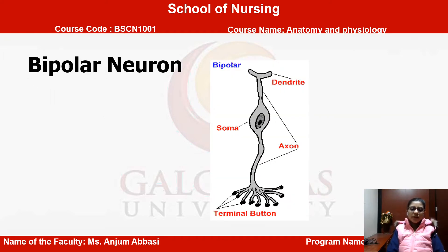In the second lecture of neuroglial cells, we were discussing the classification of neuroglial cells on the basis of their structures, in which we learned about bipolar neurons. Here we can see the diagram of the bipolar neuron. As we learned, it has two poles — one is dendrites and the other is the terminal button, which is the endpoint of the axons. The parts include dendrites, then the body in between known as the soma, the axon, and at the bottom are the terminal buttons.